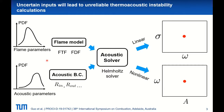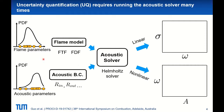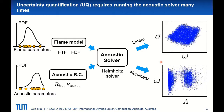In practice, it is often the case that our flame model parameters or acoustic boundary conditions are uncertain, which are usually described by probability density functions. Due to those input uncertainties, our output will not be deterministic but rather stochastic. In order to quantify this output uncertainty, we should perform Monte Carlo simulations. Simply put, we draw samples from those input PDFs and calculate their corresponding eigenvalues to get their distributions.